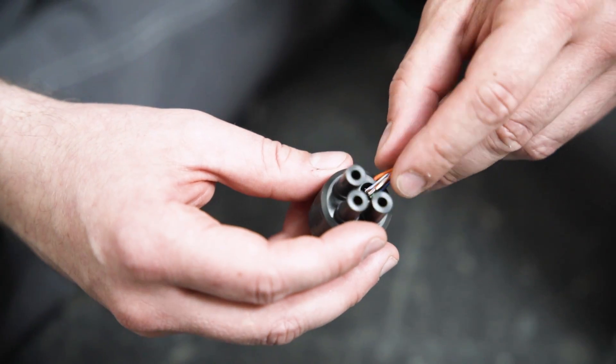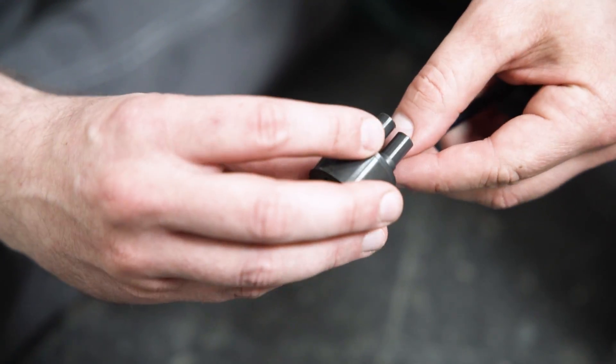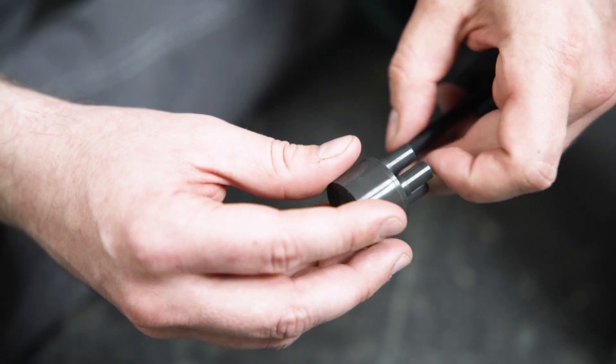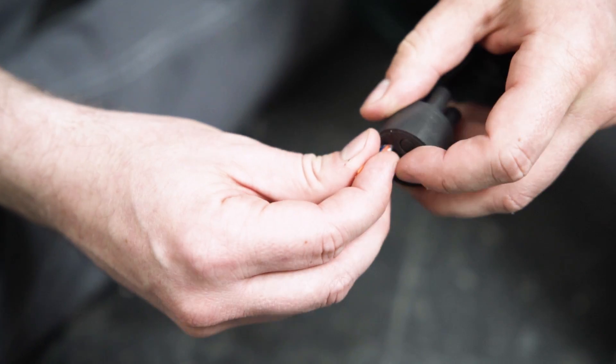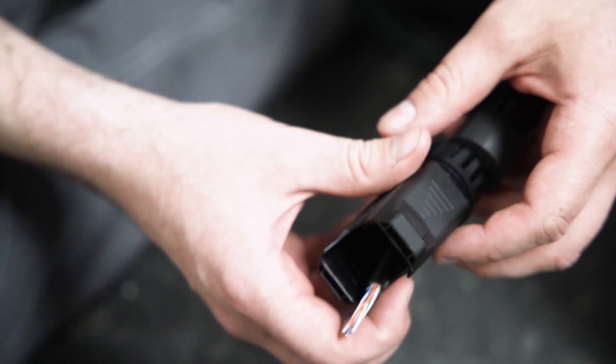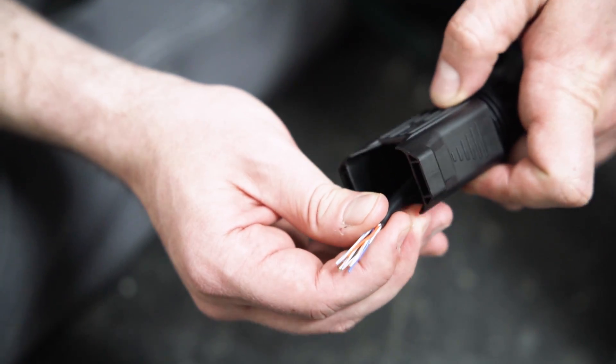Remove approximately four to five centimeters of the cable sheath of the communication cables. Then strip approximately five to seven millimeters off the inner cables. Fit the cables with end sleeves before you push them into the plug.